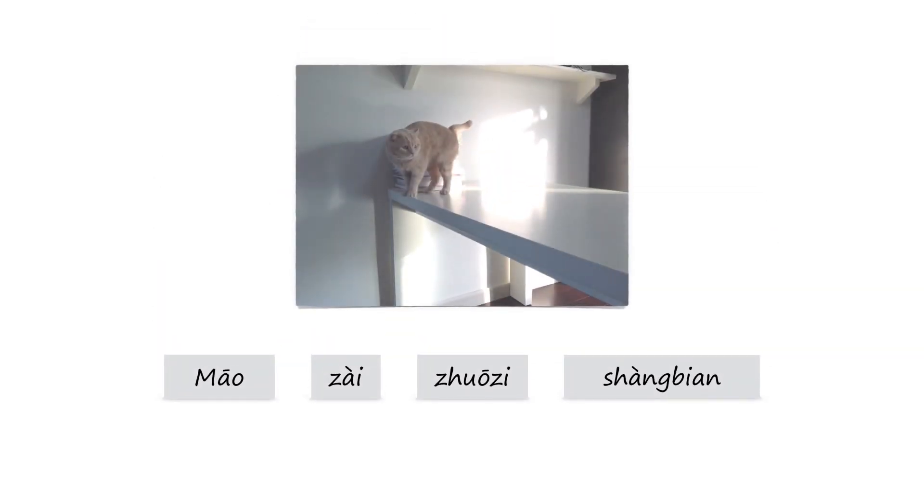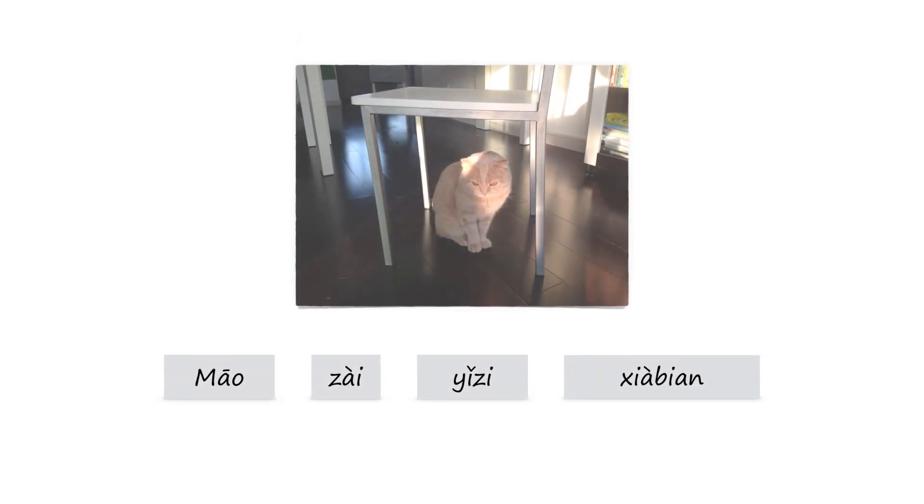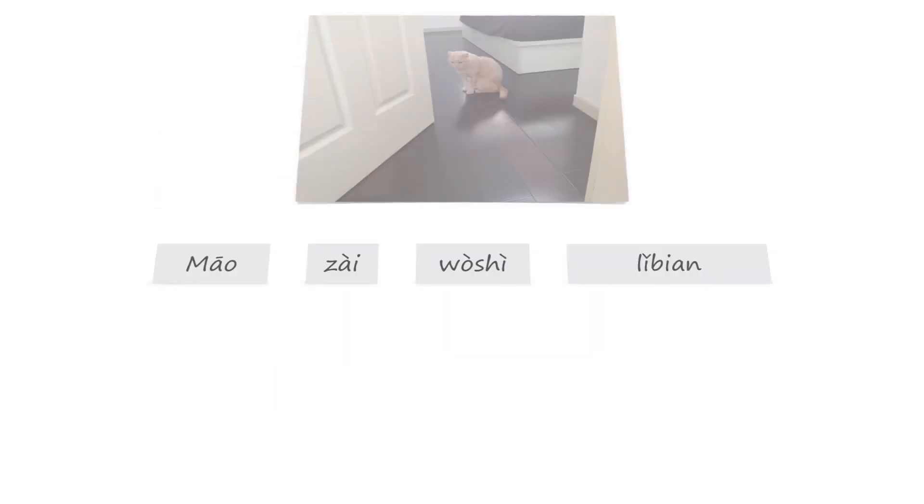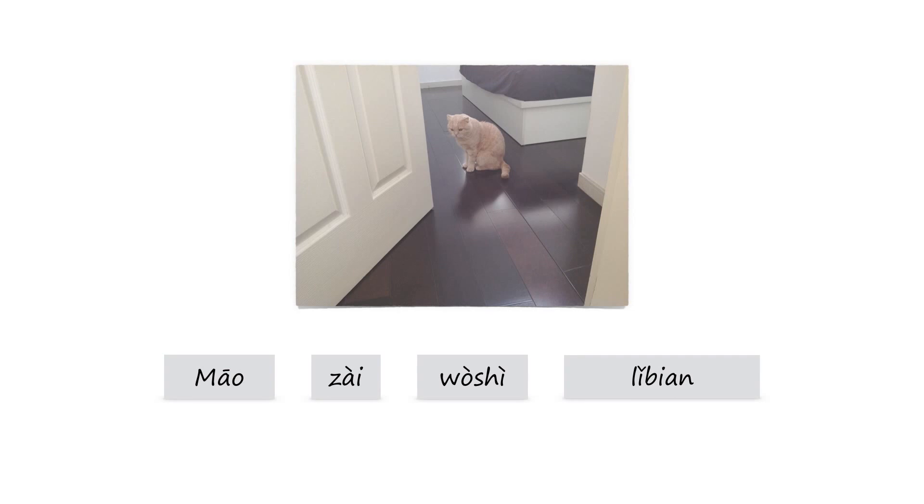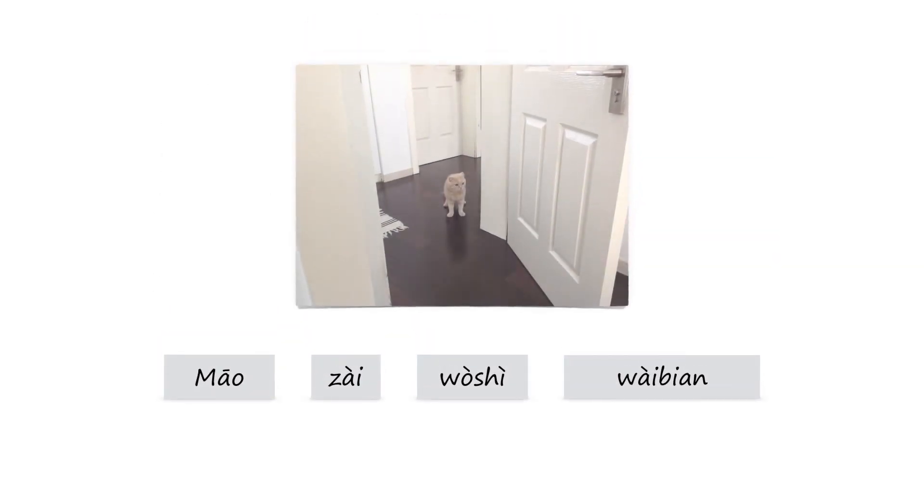Well, let's read the four sentences again. 猫在桌子上边. 猫在椅子下边. 猫在卧室里边. 猫在卧室外面.